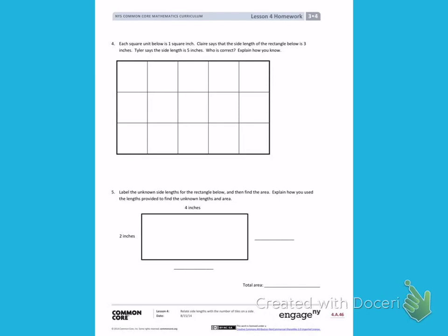Well, Claire is thinking it is 3. When I look at this shape, I can see 1, 2, 3 squares. That side length is 3 inches.